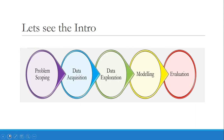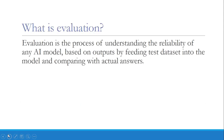In the third stage, data exploration, we try to explore the collected data, clean it, and organize it. The fourth stage is modeling, where we try to find the best AI algorithm to design our AI model. The fifth stage is evaluation, which talks about testing the model and assessing the performance of the model. Now let's see what is evaluation.